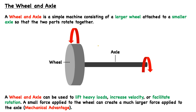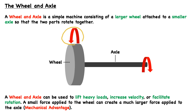Below, we can see an illustration of the characteristic wheel and axle system and its two main components. We have the larger wheel and the smaller axle. These two components are attached and therefore will rotate together. So for example, if we see that the wheel is rotating clockwise, then we know that the axle will also be rotating clockwise.